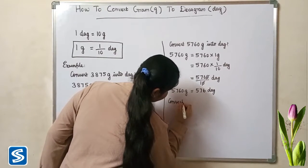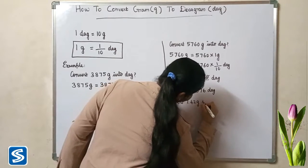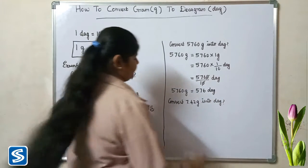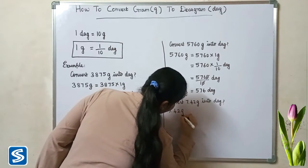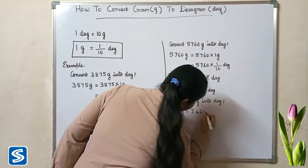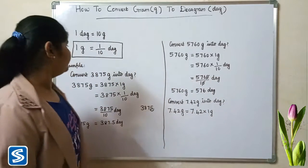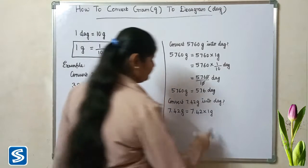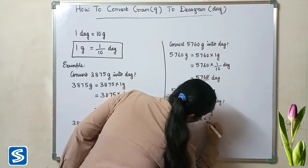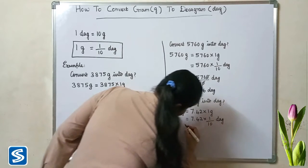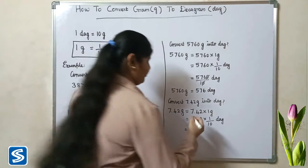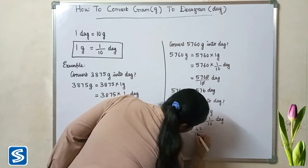Next example: convert 7.42 grams into decagrams. 7.42 grams can be written as 7.42 x 1 gram. Now we have to substitute 1 by 10 decagrams in the place of 1 gram, so 7.42 x 1 by 10 decagrams. 7.42 x 1 will be 7.42, so 7.42 divided by 10 decagrams.